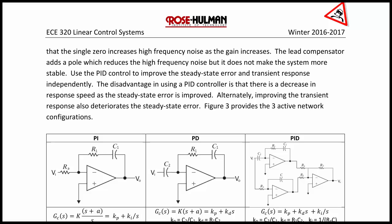PID control is used to improve the steady-state error and the transient response independently. The disadvantage of using a PID controller is that there is a decrease in response speed as the steady-state error is improved. Alternately, improving the transient response also deteriorates the steady-state error, so there are always trade-offs between the two.